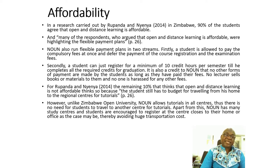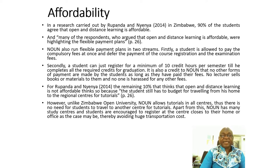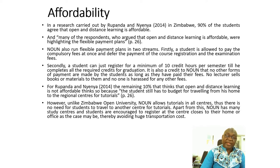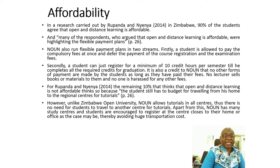Another characteristic of open and distance learning is affordability. In a study that was carried out in Zimbabwe, 90% of the students agreed that open and distance learning is affordable. Though there are some people who argue that because of the money the student will use to transport himself to the study center, at the end it is going to be more expensive.